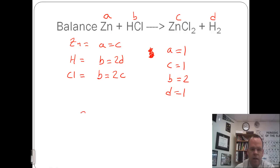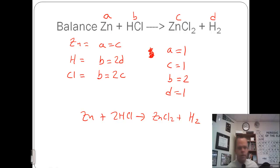So we get Zn plus 2HCl forms ZnCl2 plus H2. That's a mathematical way of solving balanced equations. You do not have to use this. You can always use the guess and check method. But for those of you who would like another method, this is another way you can go about the process.